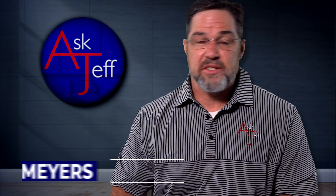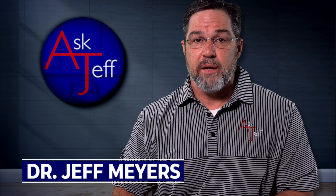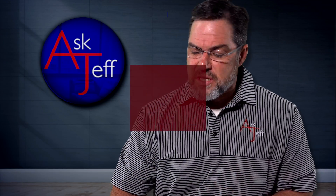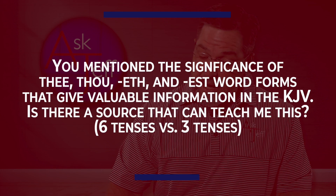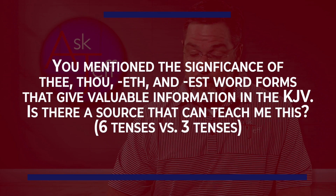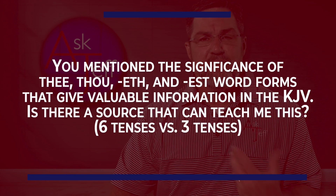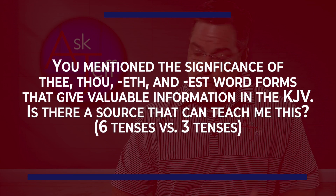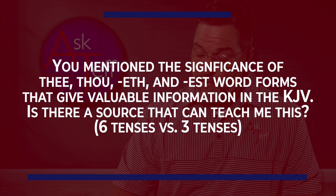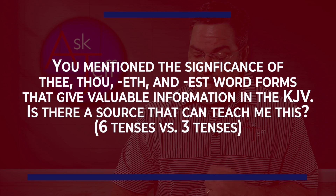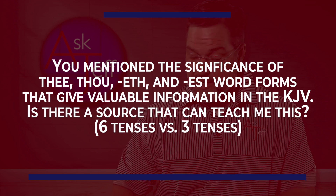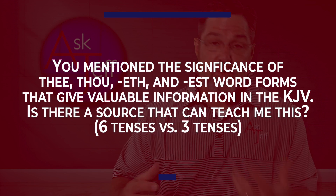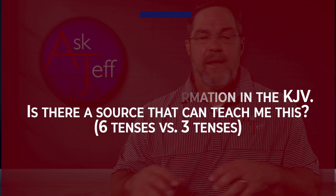Welcome to the Ask Jeff YouTube channel. Here's today's question: you mentioned the significance of the 'and thou,' ETH, and EST word forms that give valuable information regarding the King James Version of the Bible. Is there a source that can teach me this — the six tenses, the three tenses?